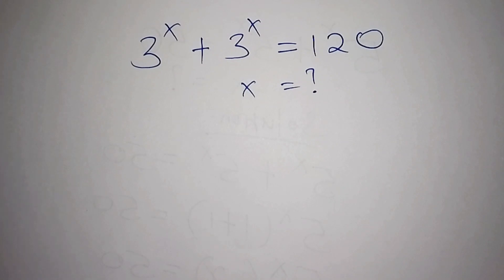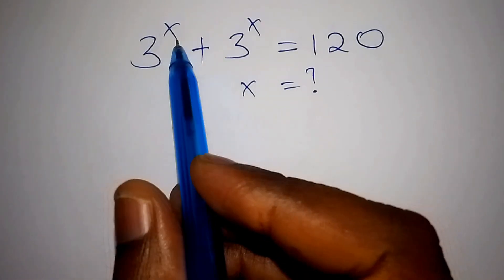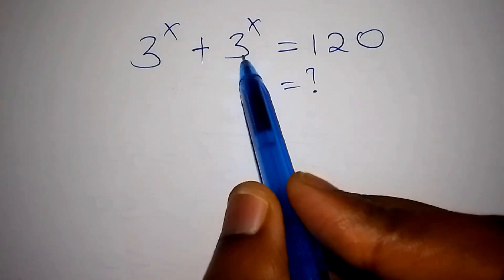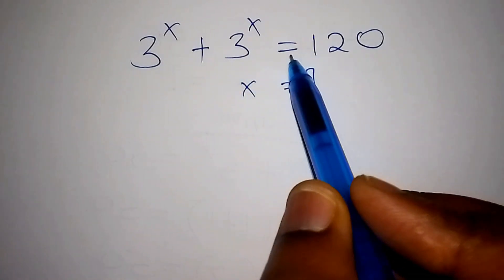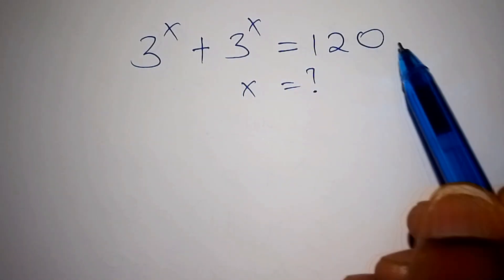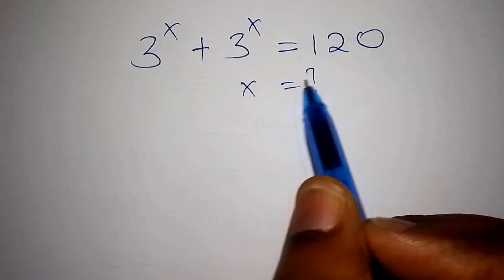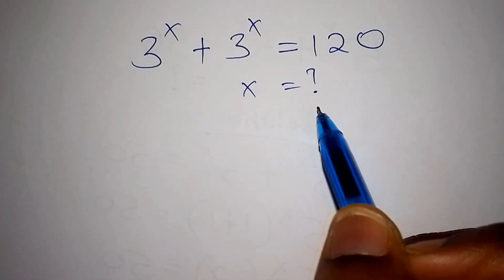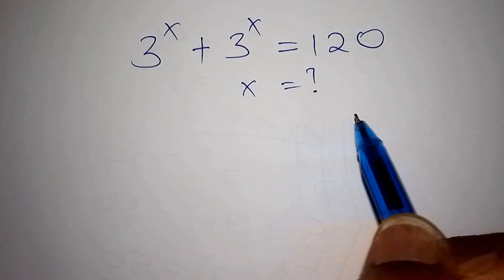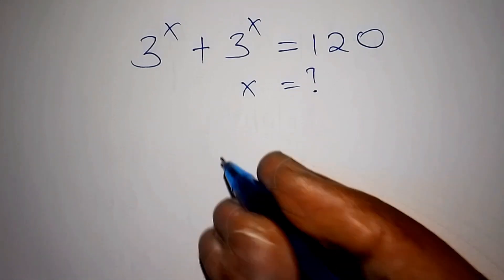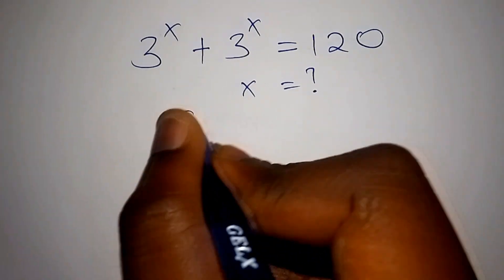Hello viewers, I want us to solve this within the shortest time possible. We have 3 to the power of x plus 3 to the power of x equals 120. We are asked to find the value of x. Make sure you watch the video up to the end. Let's begin.